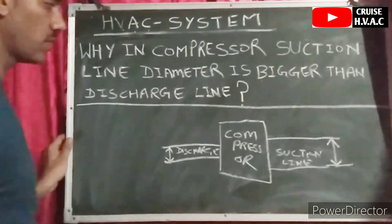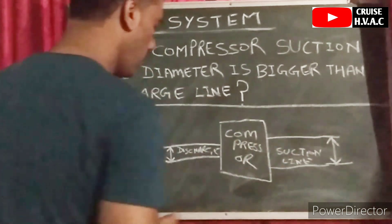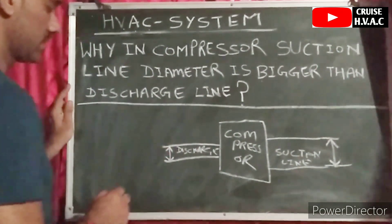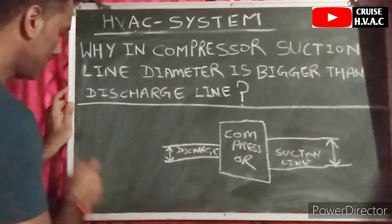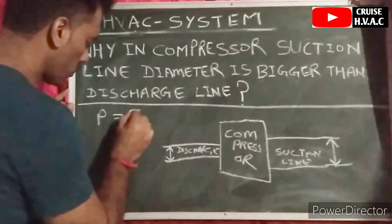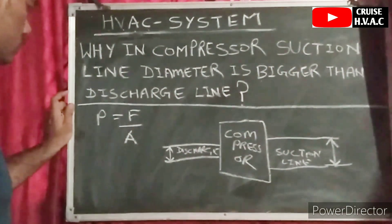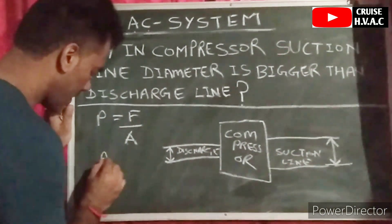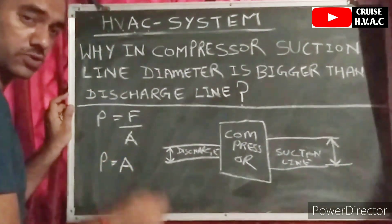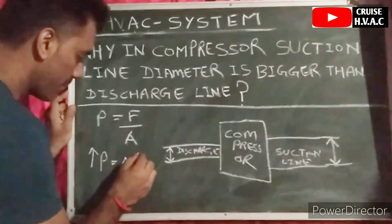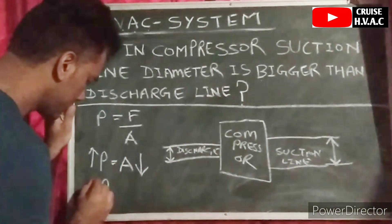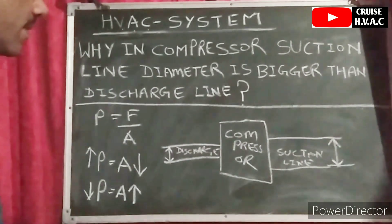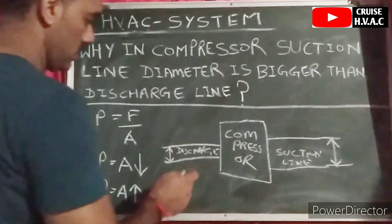So what is the reason for that? In the suction line the vapor pressure is low, but in the discharge line the vapor pressure is high. Always remember one formula: pressure equals force divided by area (P = F/A). So pressure and area are inversely proportional — if the pressure increases, the area will decrease, and if the pressure decreases, the area will increase.